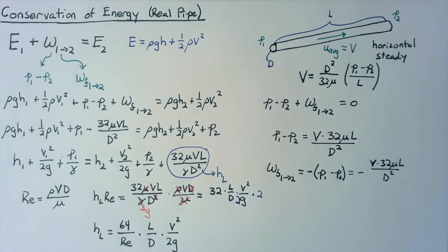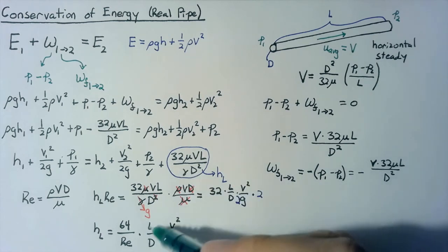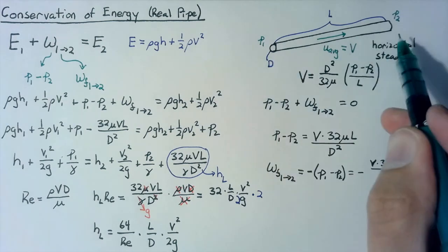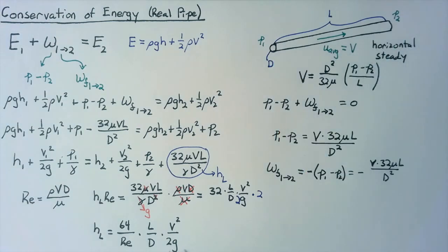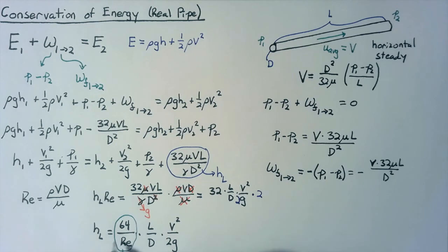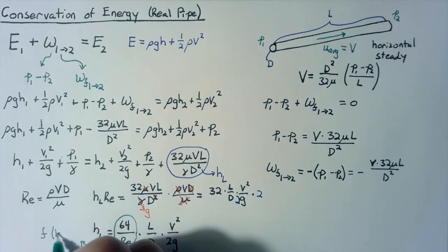So now what we've done here is we've separated out our head loss into three distinct pieces. The second here is some geometry of the pipe. How long are we going along compared to the diameter? The third is exactly the kinetic energy. This first piece is the new piece, and it's going to be what we call the Darcy friction factor for laminar flow.